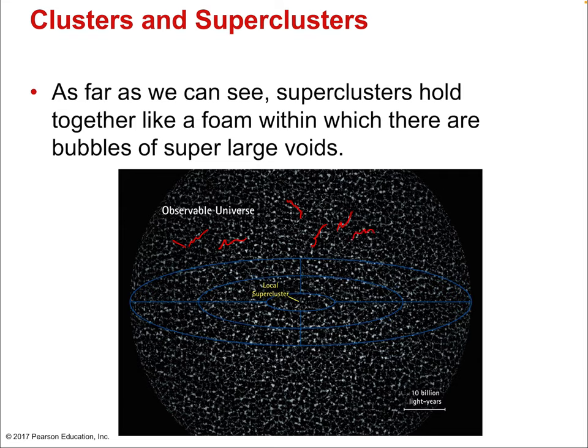The universe appears to be a network of superclusters, all created by some single physical phenomenon assumed to be the Big Bang. There are also large voids where there are no galaxies — big gaps between galaxy clusters. That concludes our discussion on stars and galaxies, leaving only our final discussion on the nature of space and time itself, starting with the Big Bang. Thank you so much for watching.